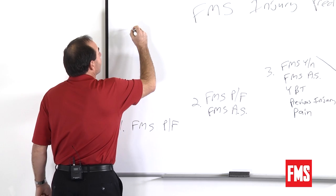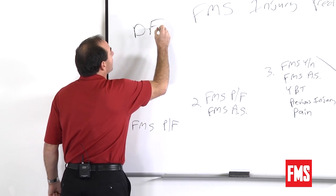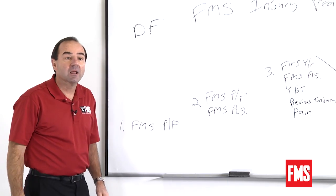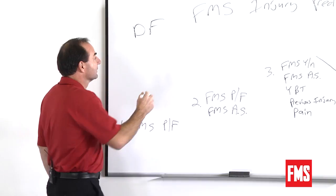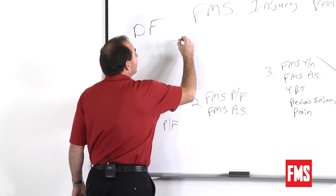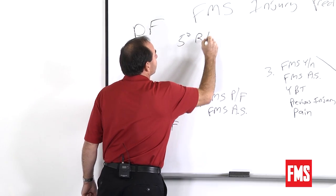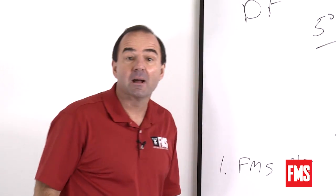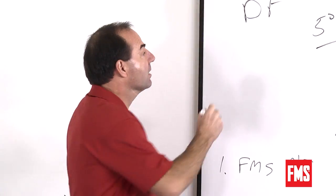We found some pretty neat things. One of the big ones was dorsiflexion range of motion — closed chain — where a five-degree right-to-left difference was a risk factor all by itself.